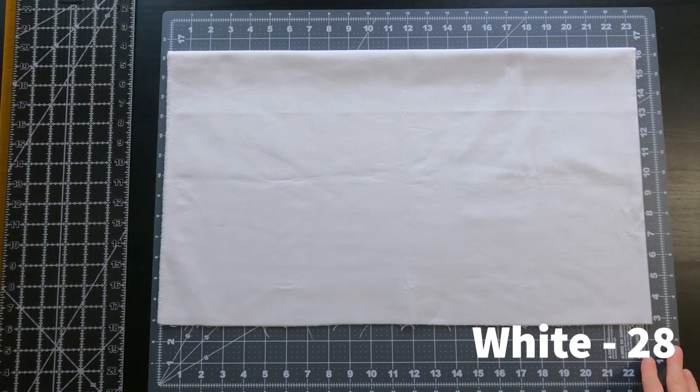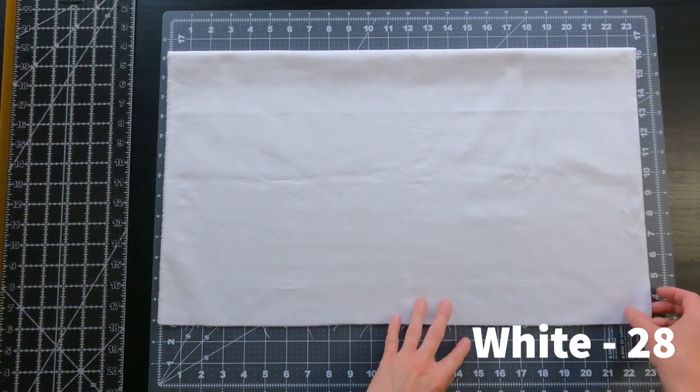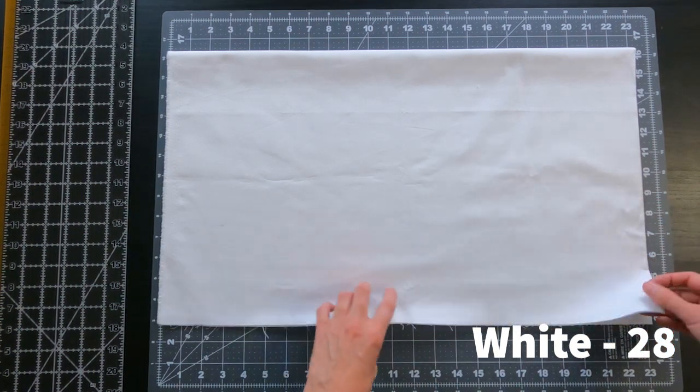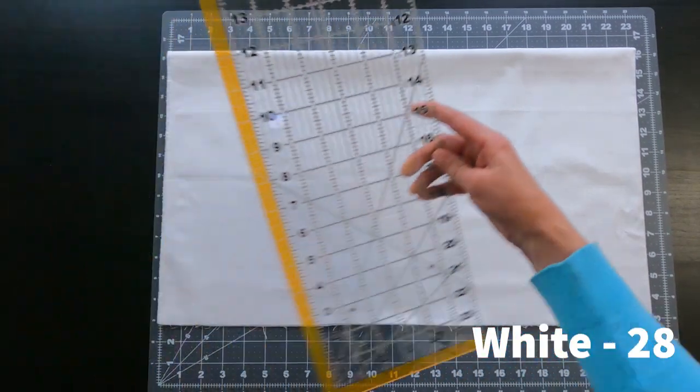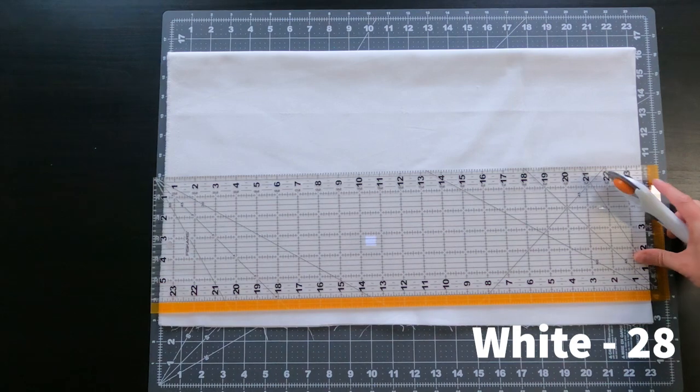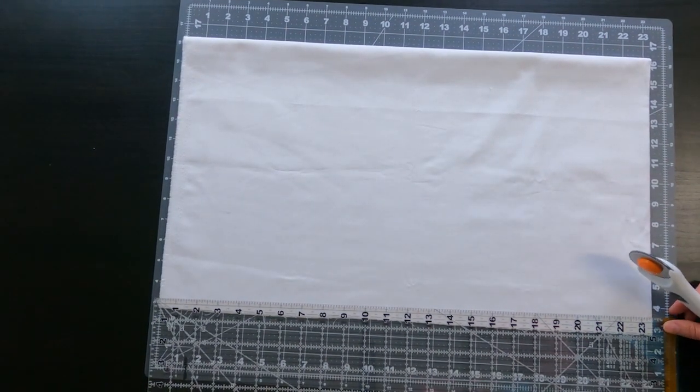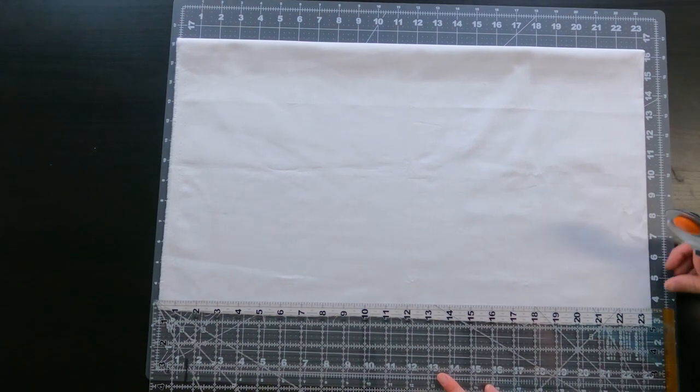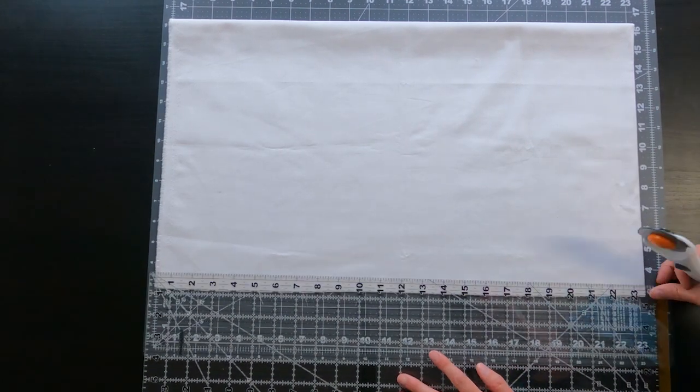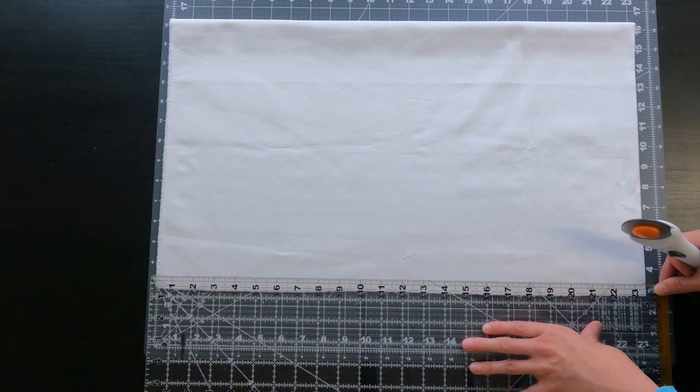Now that the blue is all cut, we can go ahead and cut the white pieces for the outsides of our drunkard's path. So for this, you can actually cut multiples at a time. So I've got the fabric folded in half. And the first thing I'm going to want to do is just make sure this edge is nice and square. Just make sure that everything, all four layers are going to be even.